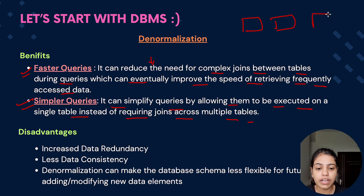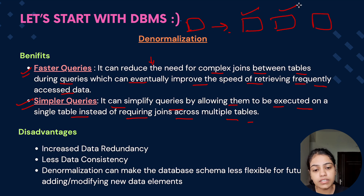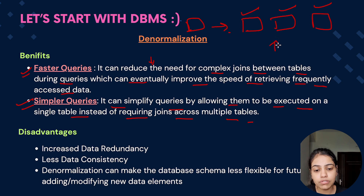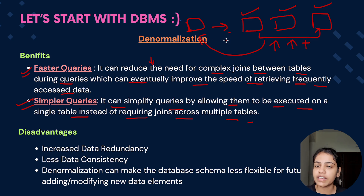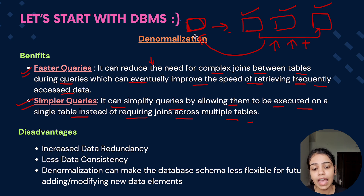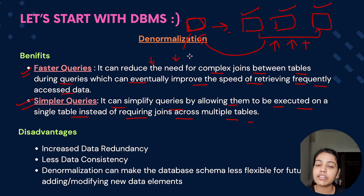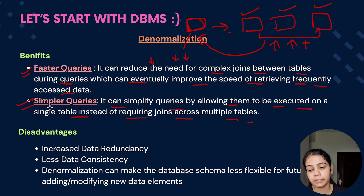In normalization we used to break a single table into multiple tables, and making queries across different tables increases both time and complexity. In denormalization we combine all tables into a single table — even knowing that data redundancy can occur — and because everything is in one table, the query time is reduced and the queries are simpler.